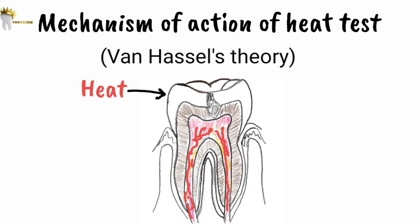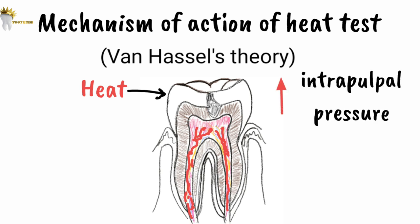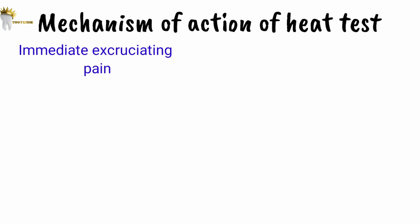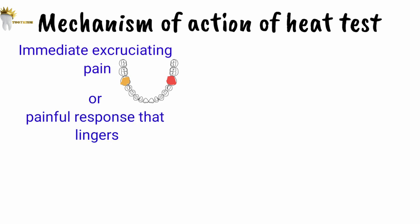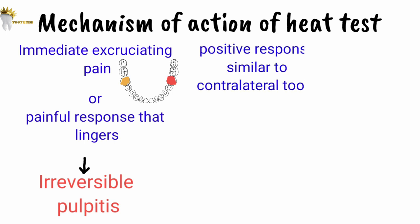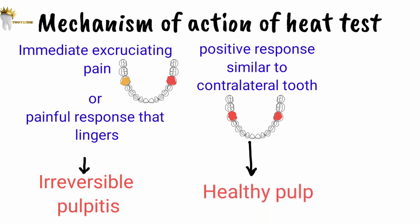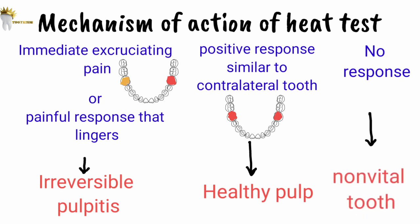According to Van Hassel's theory, heat application results in dilation of blood vessels of the pulp, increasing pressure inside the pulp. An immediate, excruciating painful response significantly different from the contralateral tooth, or a painful response that lingers after removal of the heat stimulus, indicates irreversible pulpitis. A positive response similar to the contralateral controlled tooth indicates a healthy pulp. If the pulp is necrotic, there will be no blood vessels and therefore no response to heat — indicating a non-vital tooth, which must be confirmed with other vitality tests.